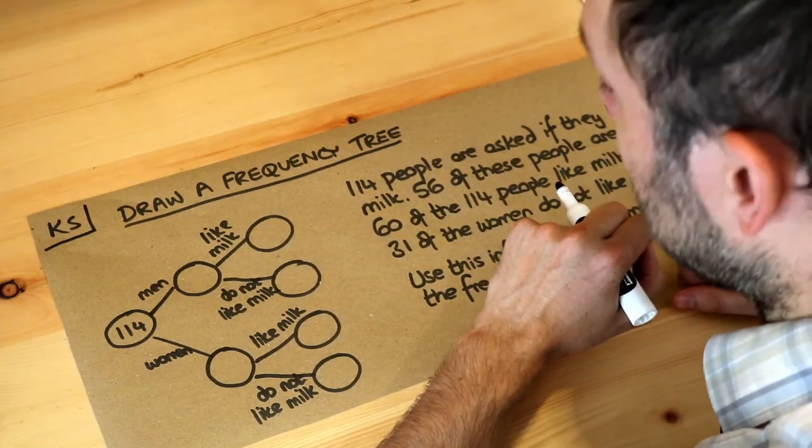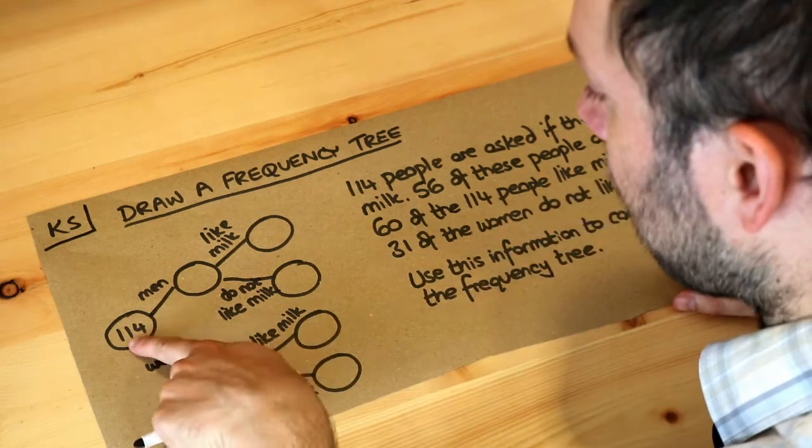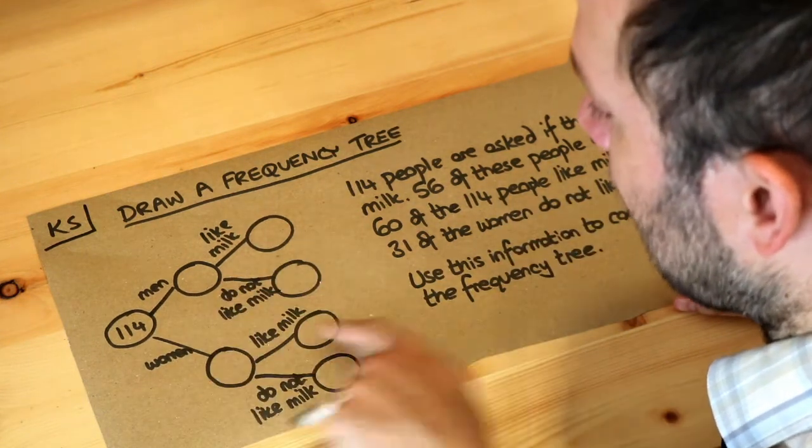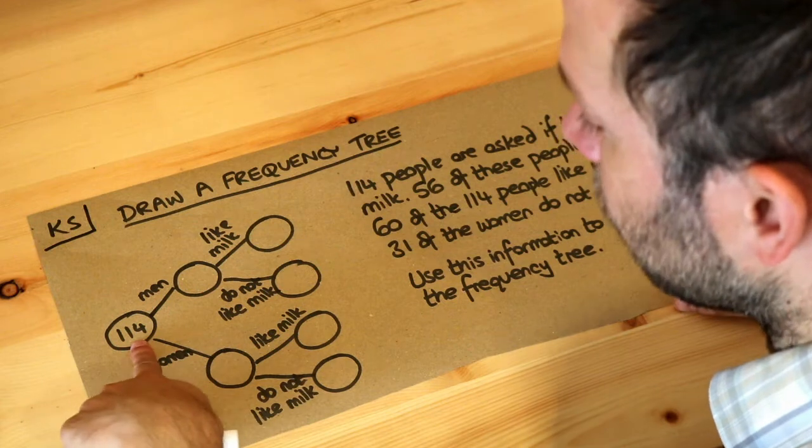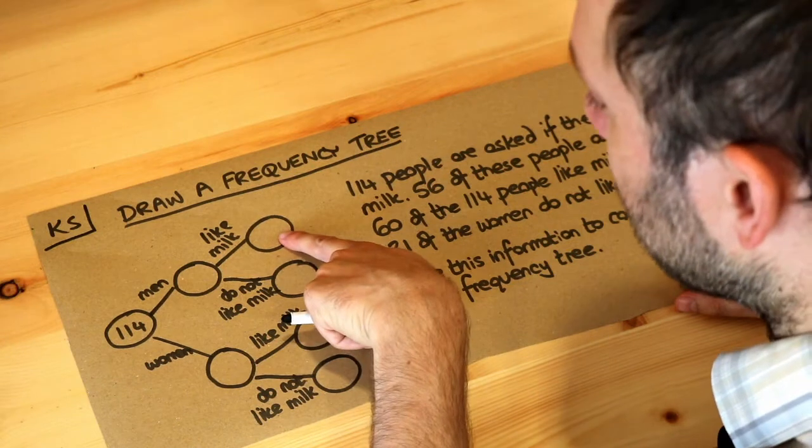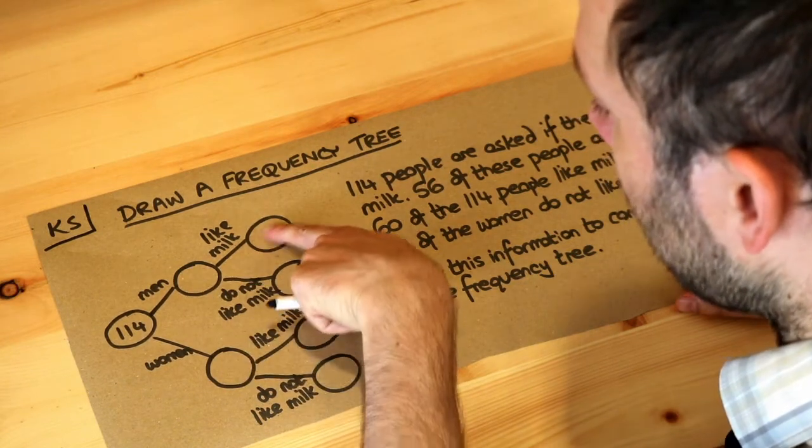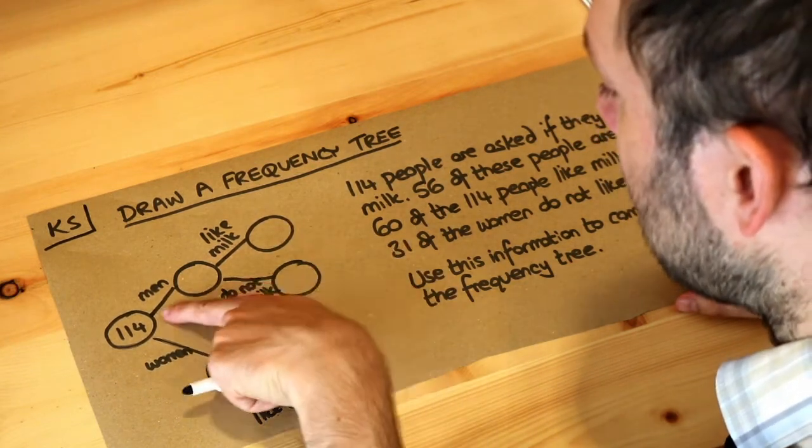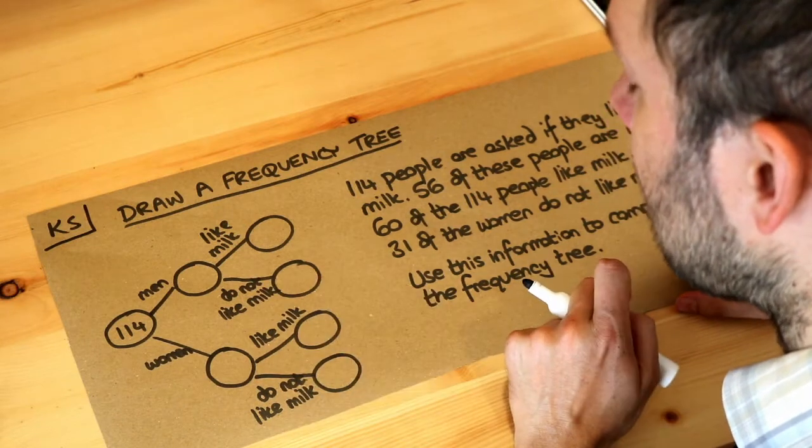The way a frequency tree works is that we have the frequencies in here, how many of each thing we have, so how many people we have in total on the left, and then here we would have how many men we have, how many women we have. This would represent how many men like milk. This would be how many men do not like milk, etc.